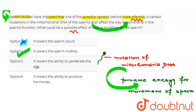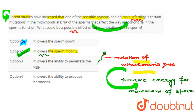The second option given is: it lowers the sperm motility — so here is the answer, because due to the mutation, energy will not be produced sufficiently, and the sperm will not be able to move, so its motility will be reduced.